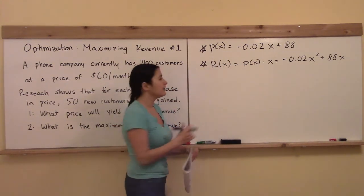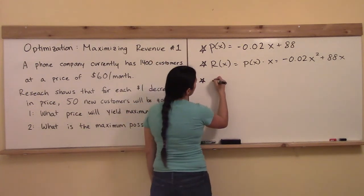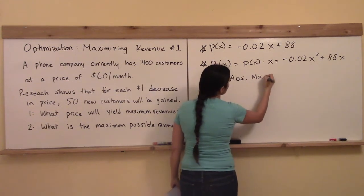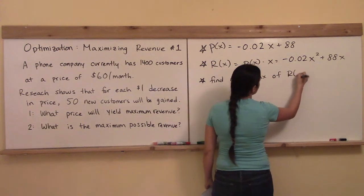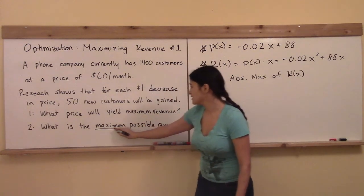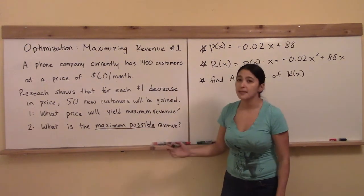Good. And now this last step is going to be the hardest step because it's going to be find the absolute max of R(x). Now when something says, what is the maximum possible, that means absolute.